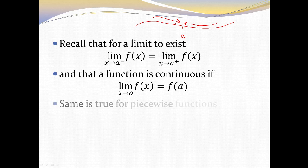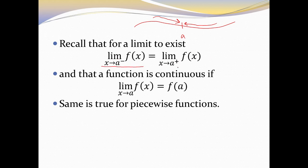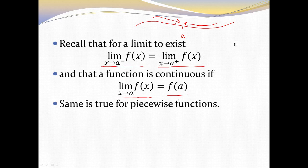In order for a piecewise function to be continuous, both of these things must be true: that the limit as x goes to a exists — meaning the left side limit is the same as the right side limit — and then when you evaluate the function at a, it equals that limit. These piecewise functions are a little more difficult to deal with because they are one function composed of multiple functions.